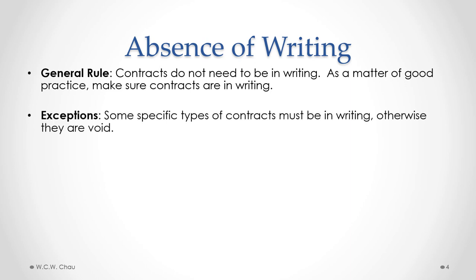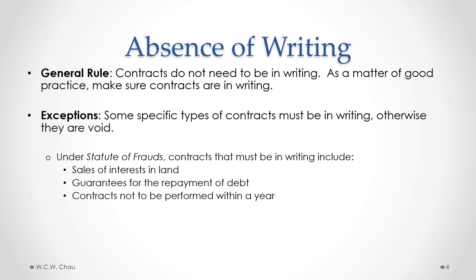There are exceptions to the rule that contracts do not need to be in writing. There are some specific types of contracts that have to be in writing in order to be a valid contract. Under legislation called the Statute of Frauds, there are three types of contracts that have to be in writing. The first is contracts for the sale of interests in land. So if you are doing a deal to buy real estate, that deal has to be done with a written contract. You cannot do a real estate deal on just a handshake.